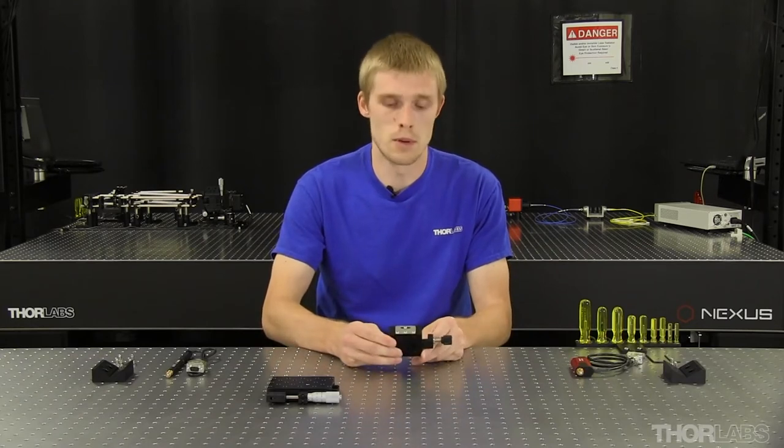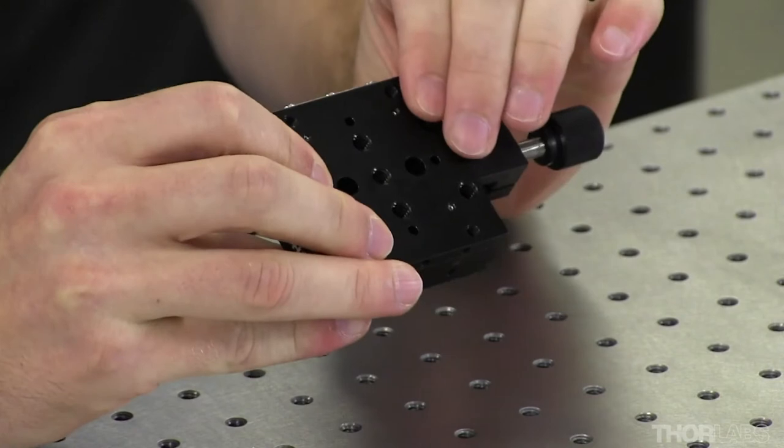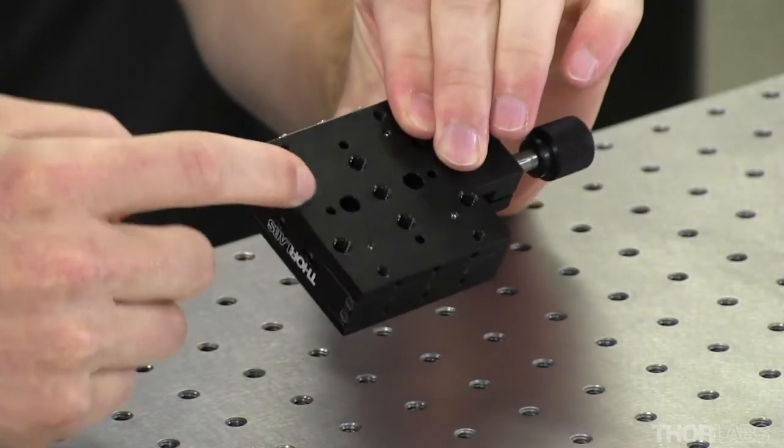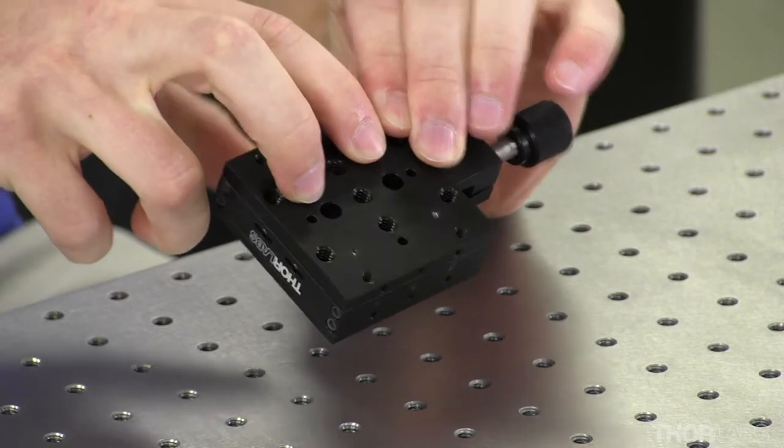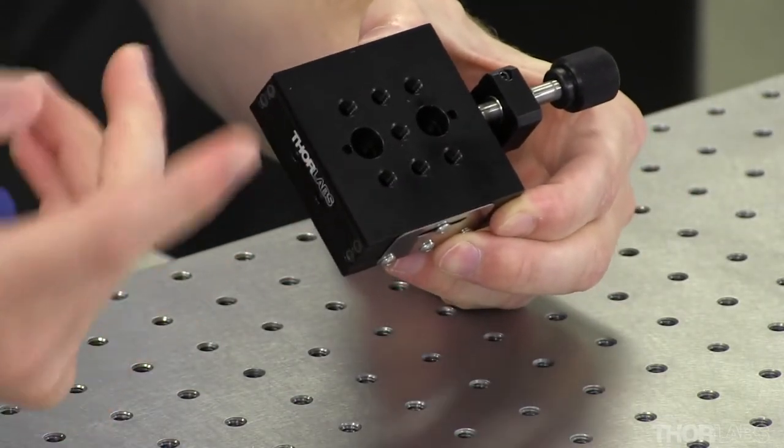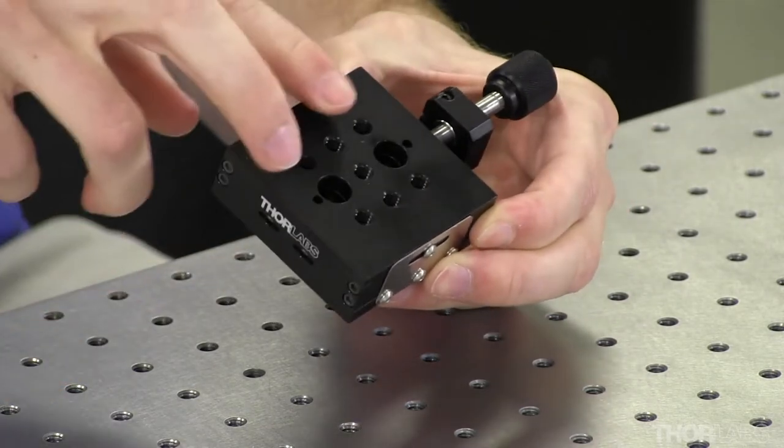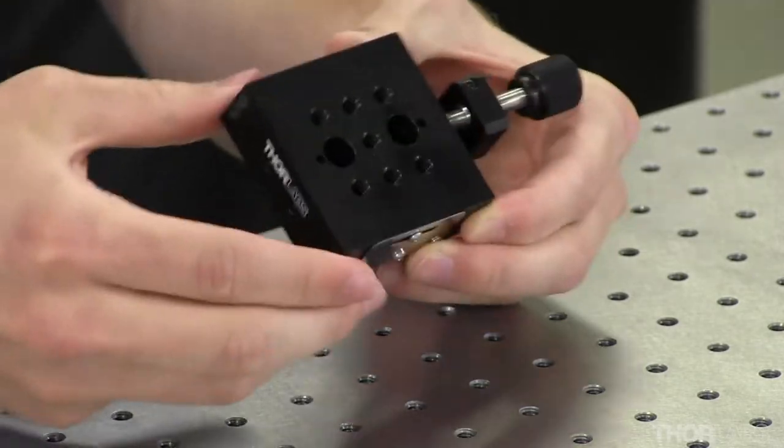The stage is comprised of two main parts: the fixed world on the bottom or the base plate, which will attach directly to your table with two holes here for cap screws to be inserted into, and the other part of the stage is the moving world on top where you can mount optomechanics. There are two holes here as well to access the two holes on the bottom plate for mounting to your table.